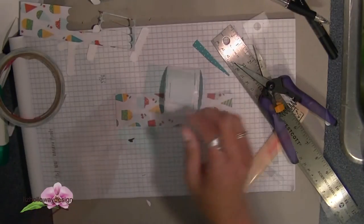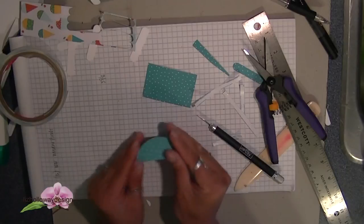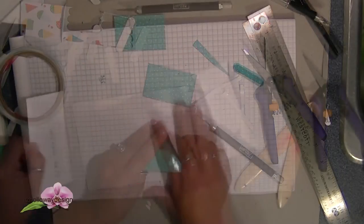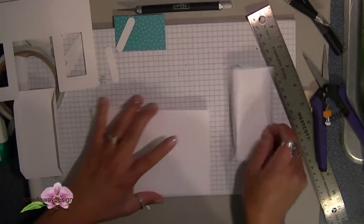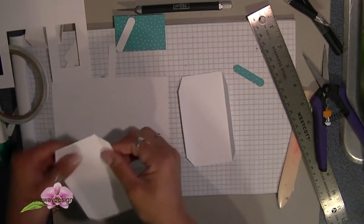To cover the white part showing, all I did was I took the Bermuda Bay marker and colored in the white cardstock. So once all the awning pieces are done, set aside and we're going to start working on building the parlor.